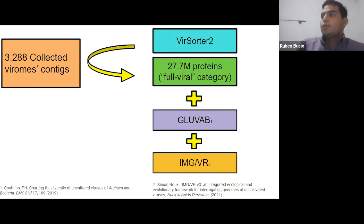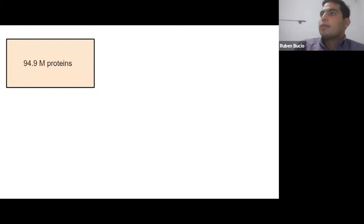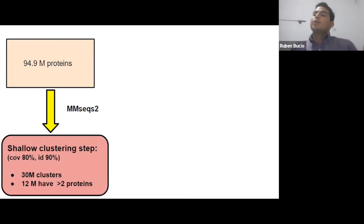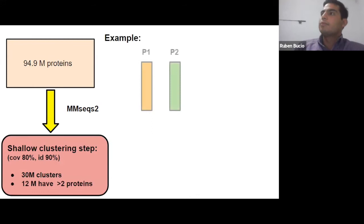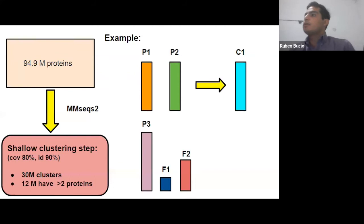In this way we managed to compile almost 95 million proteins. Those proteins were clustered in a two-step iterative clustering process. The first step, called shallow clustering, reduced redundancy in our database based on coverage and identity — 95 million proteins were clustered into 30 million clusters, 12 million of which have more than two proteins. The idea was to gather similar proteins into the same cluster and also to assemble fragments into the same cluster.